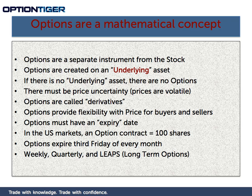This is precisely why options are called derivatives — because their prices are derived from the price of the underlying asset. Options were created to provide flexibility with price for buyers and sellers of certain products, whether corn, olives, or anything else. Buyers and sellers had different needs to position themselves with respect to uncertainty in the future — whether one month, six months, or one year. So to either protect themselves or hedge themselves, they created these instruments called options.